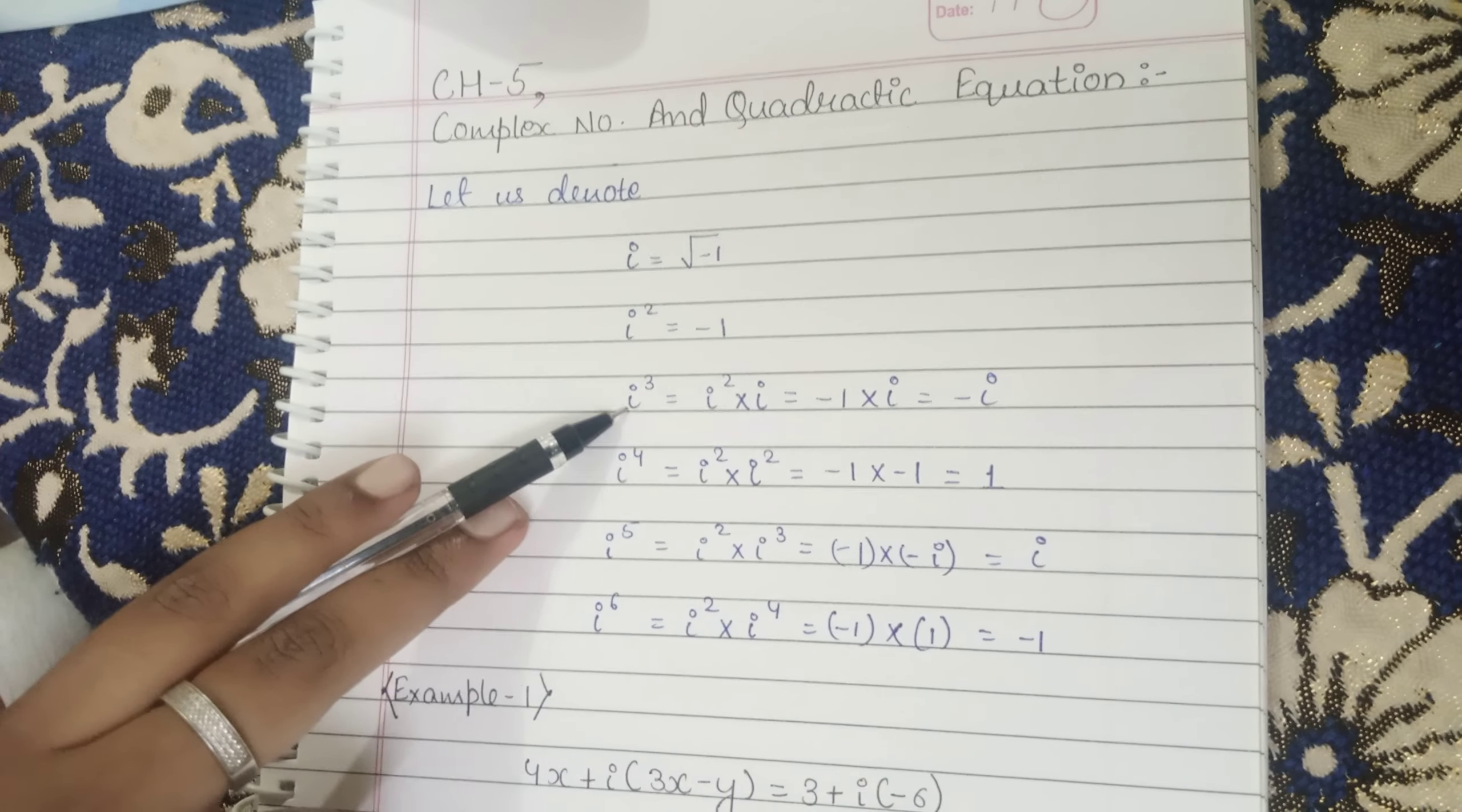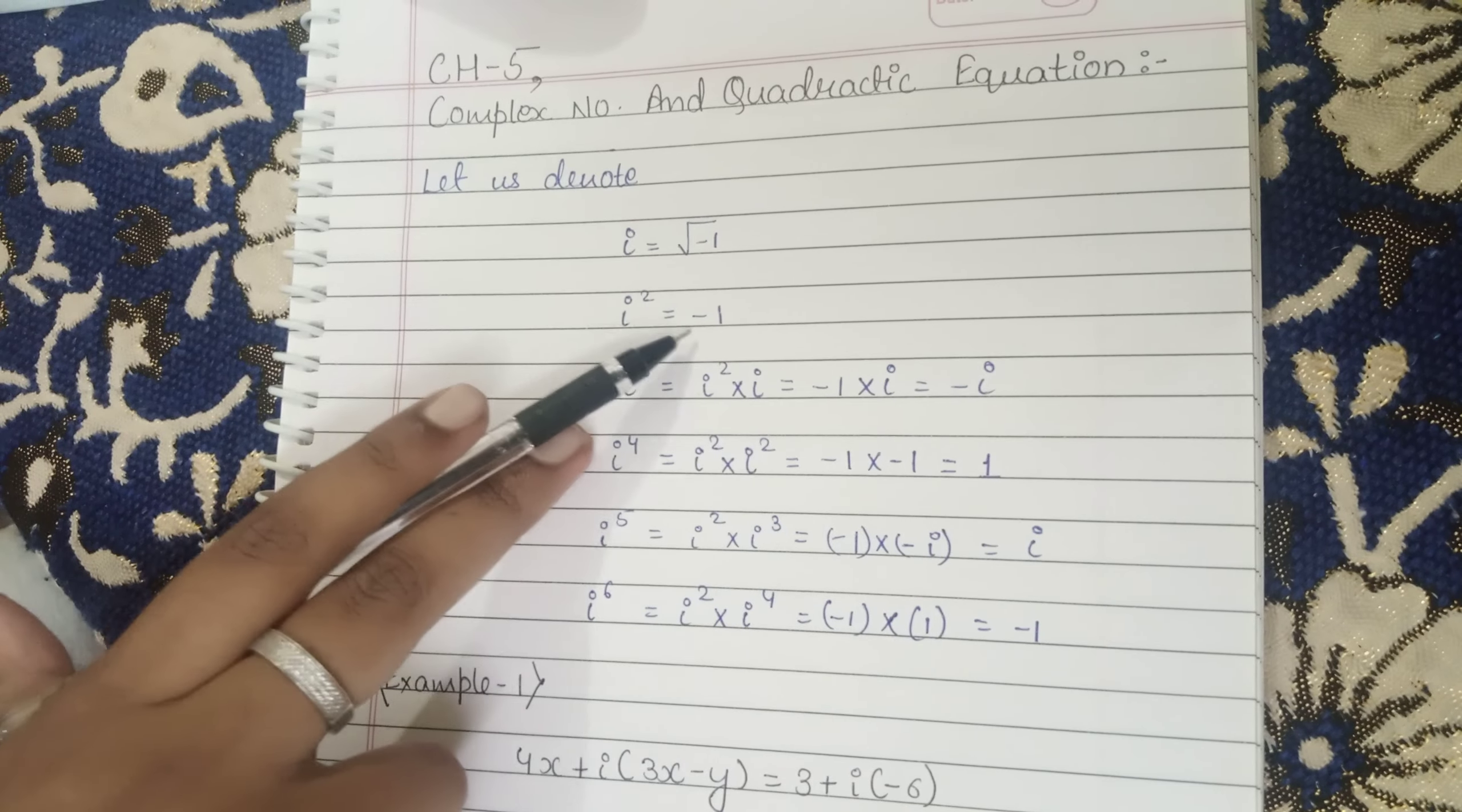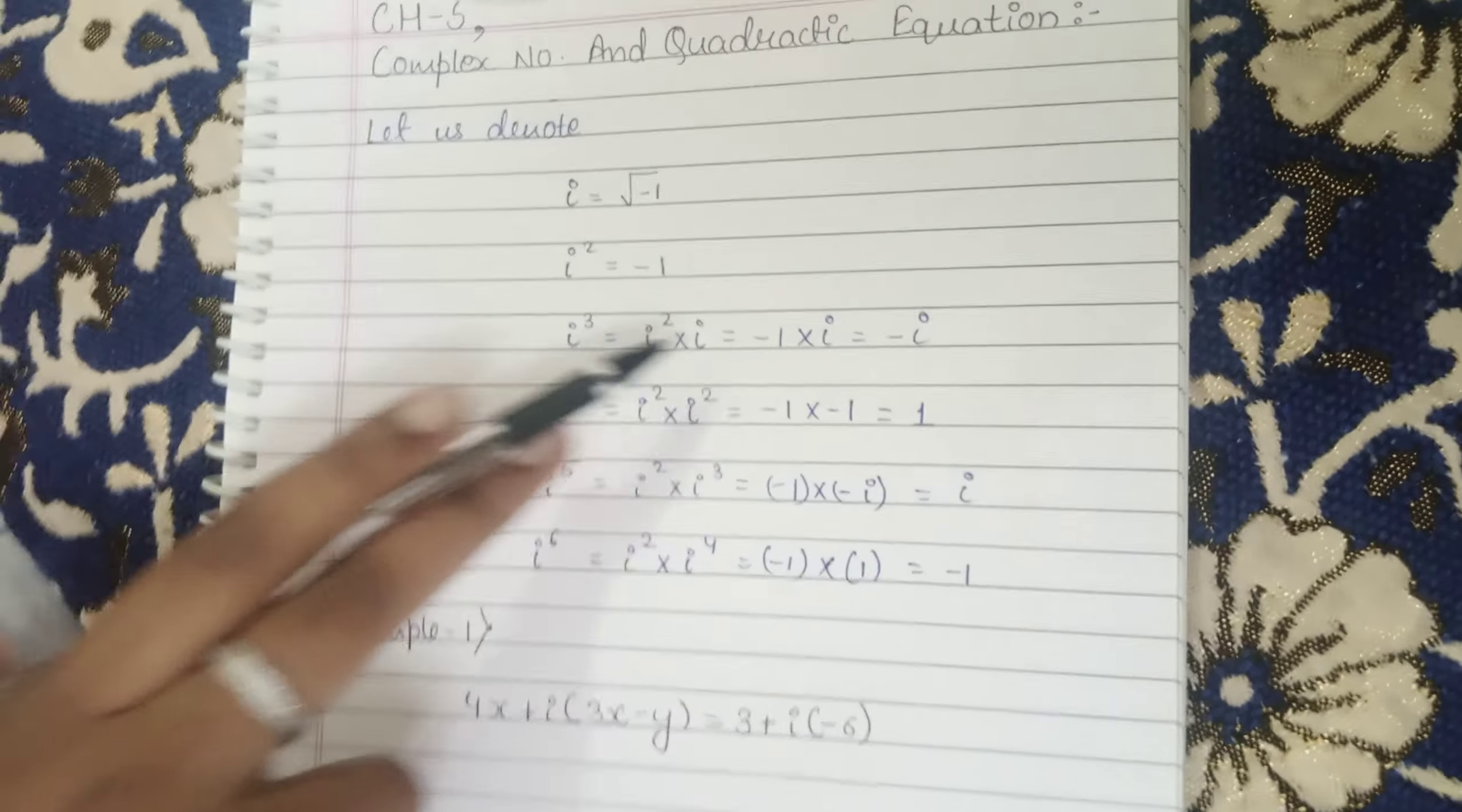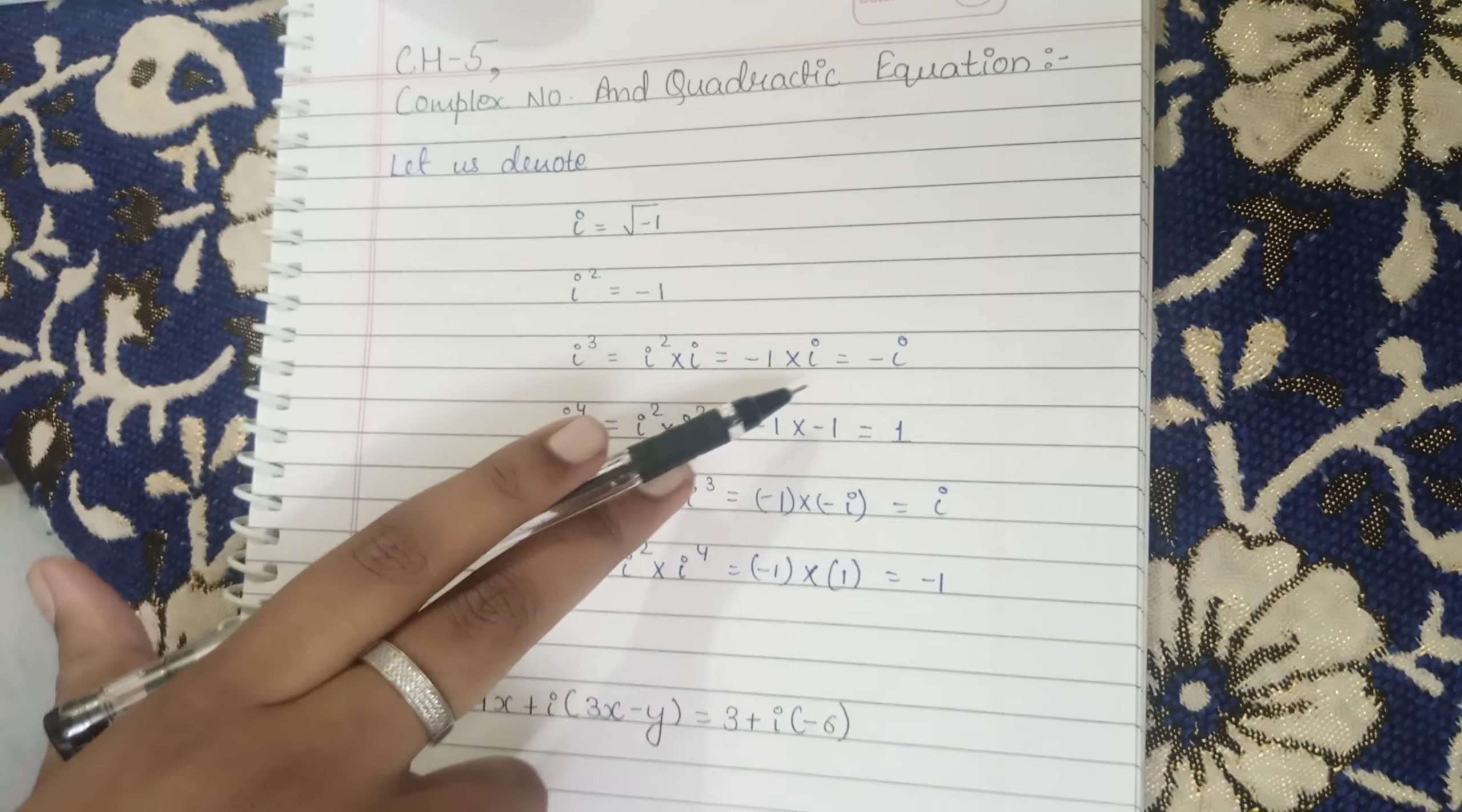What we did is break down the iota square into i. iota square value is minus 1, we put the iota square to minus 1 and put the iota to iota, so minus normally into minus.